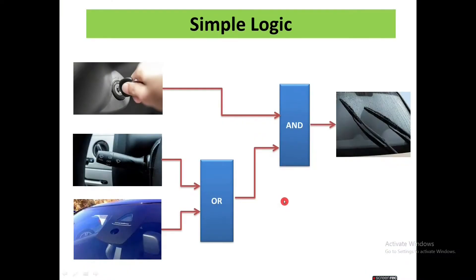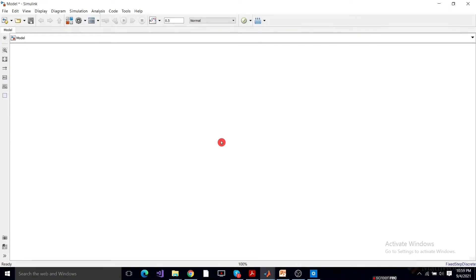We have considered a simple logic to develop the model. We are going to control the wiper mechanism. The inputs are ignition key, car wiper knob, and rain sensor. When ignition key is turned on and knob is turned on, the wiper mechanism will turn on. If key is on and rain sensor gives a true input, the wiper will also turn on. If key, knob, and rain sensor are all true, the wiper turns on as well.